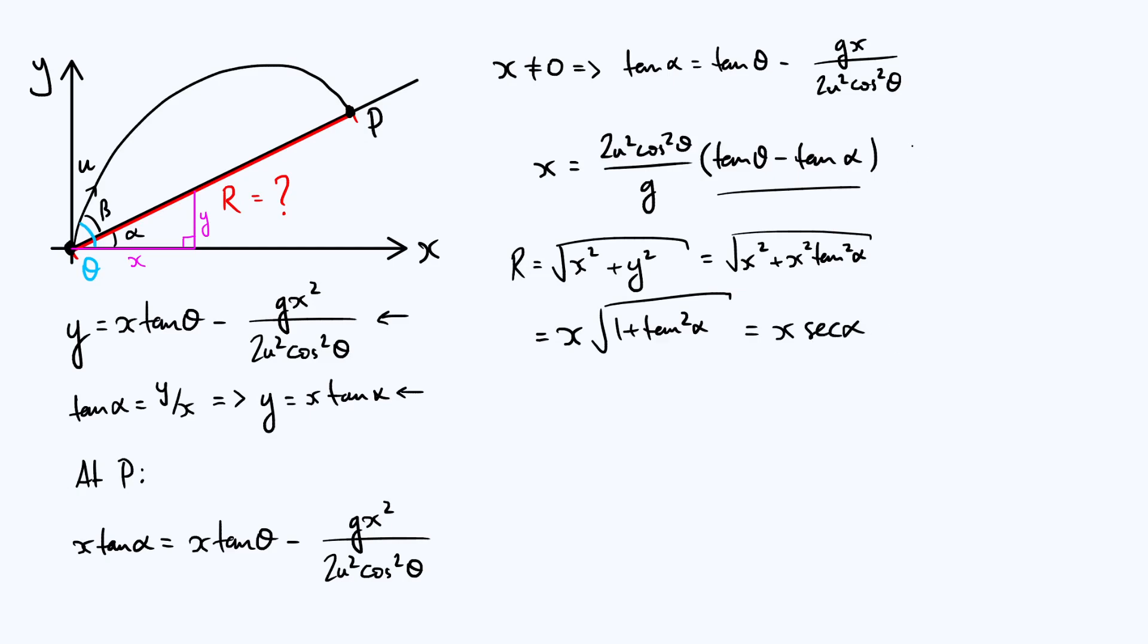So then we can just sub our expression for x into an expression for r, which basically just means times x by sec alpha. So we're going to end up with r equals—we've still got our pre-factor of 2u squared over g from x. I'm going to write my cos squared theta factor separately here. Remember that sec alpha means one over cos alpha, so I'm going to put a cos alpha on the denominator there, and then you've got this bracketed tan theta minus tan alpha term.